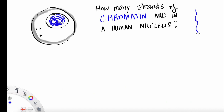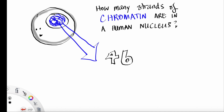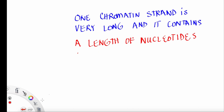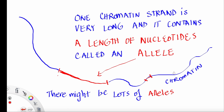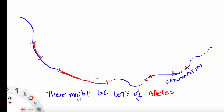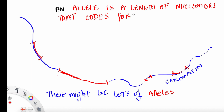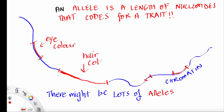There are 46 strands of chromatin in the human nucleus. One chromatin strand is very long. It contains a long length of nucleotides called an allele, and there might be lots of different alleles on this chromatin strand. An allele is a length of nucleotides that codes for a particular trait, such as eye color, hair color, or even something to do with nerve function, or any other trait important for your body's function.